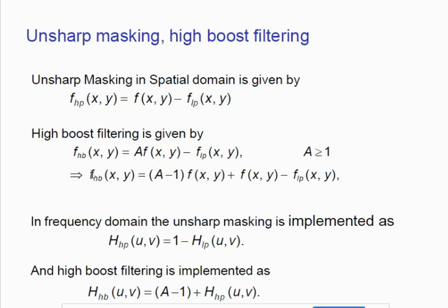For high boost filtering in the frequency domain, we convert the spatial domain elements: the (a−1) term carries over directly, and the component where we subtract the low pass from the full spectrum is replaced by a high pass component. The f(x,y) term becomes one, and together with the high pass component this gives us the frequency domain form of high boost filtering.